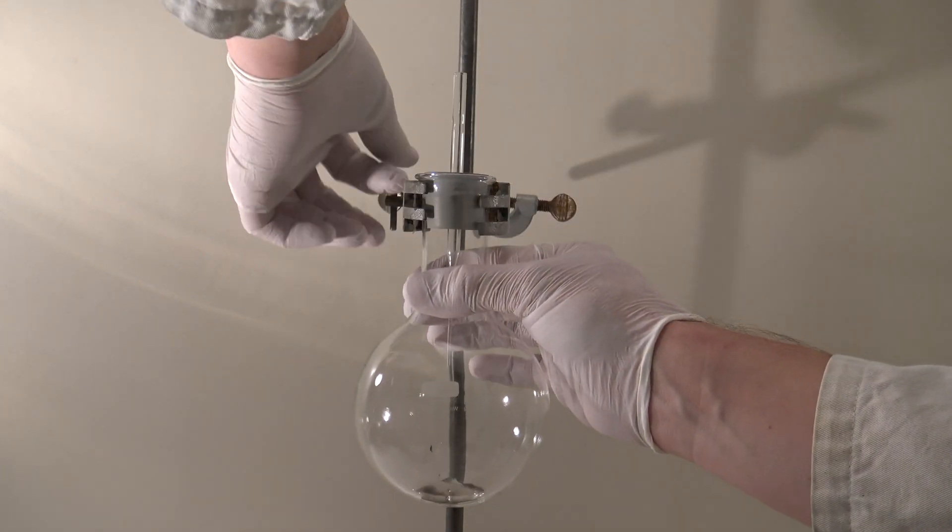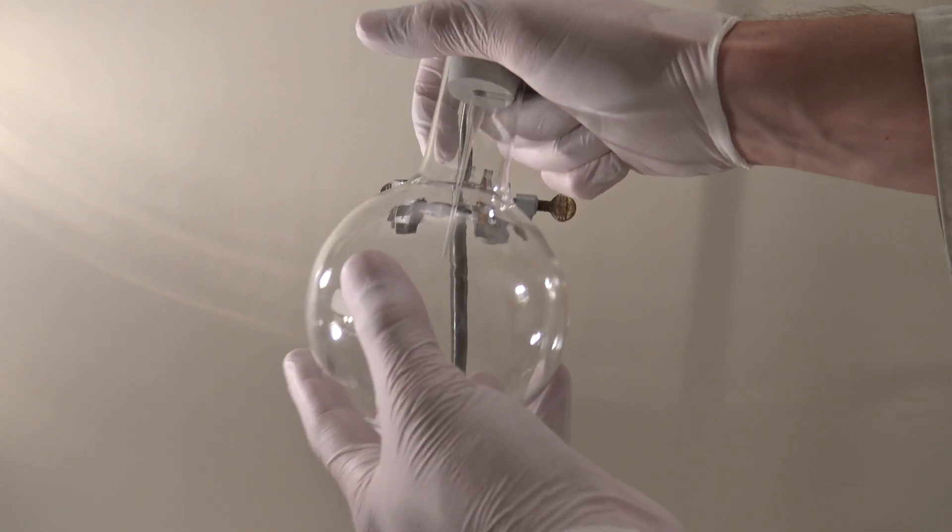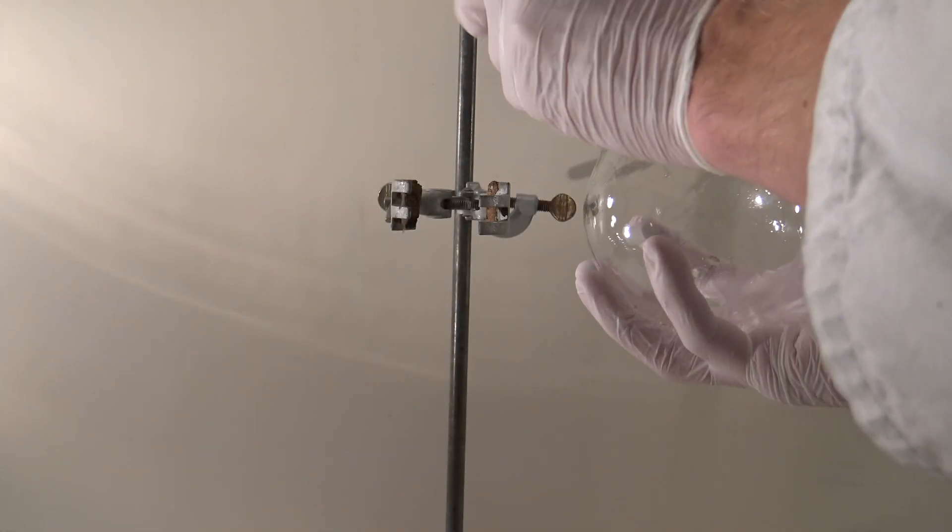By shaking the flask, the air on the inside is saturated with ammonia, then the flask is turned upside down and attached to a ring stand.